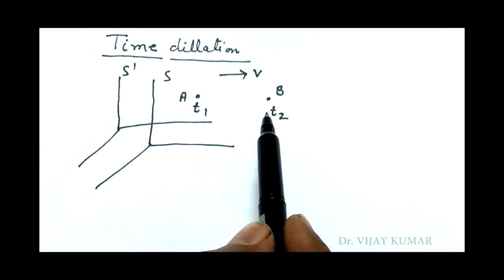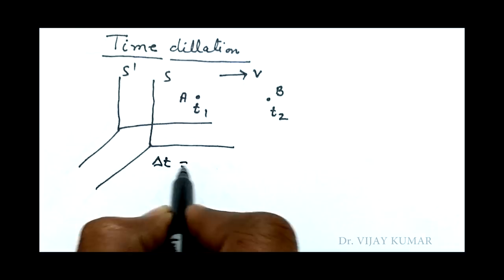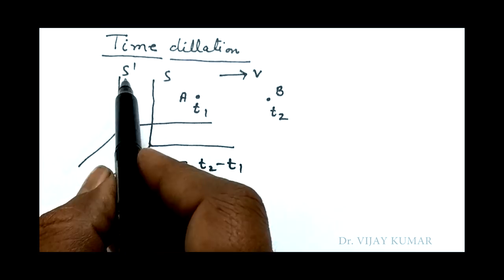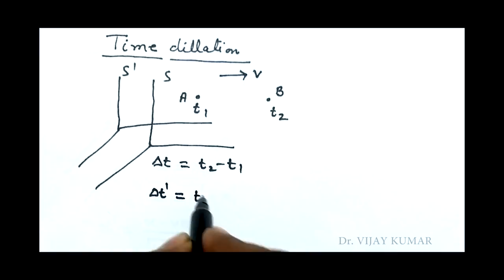The time difference of this event is t2 minus t1. If we observe by another frame S dash, then time difference of this event becomes delta t dash equal to t2 dash minus t1 dash.